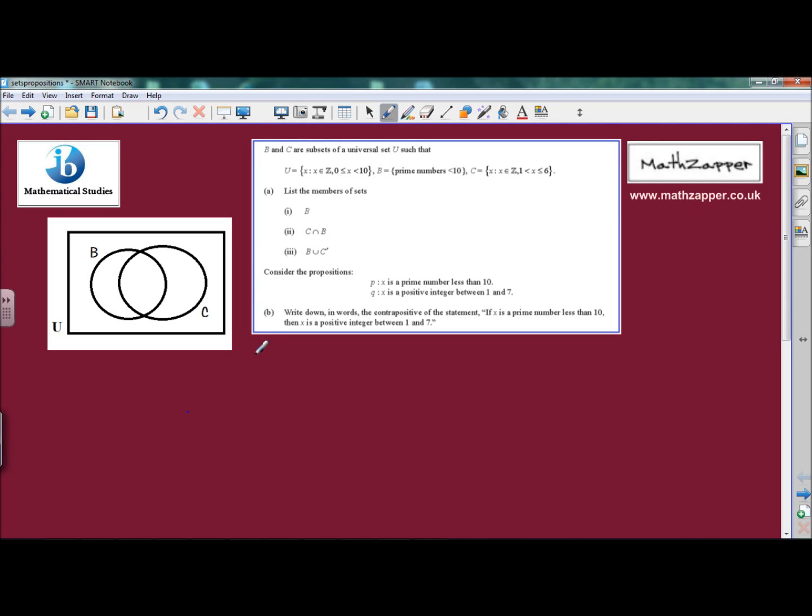International Baccalaureate Mathematical Studies. B and C are subsets of a universal set U such that the universal set contains only integers between 0 and 10 but not including 10.